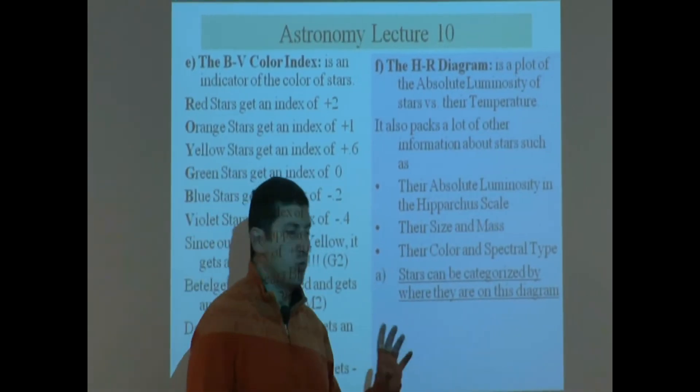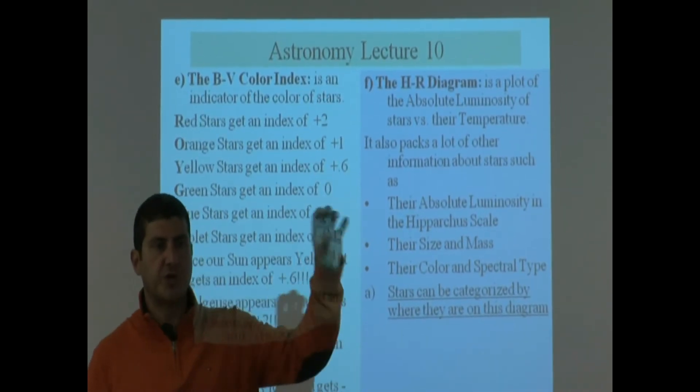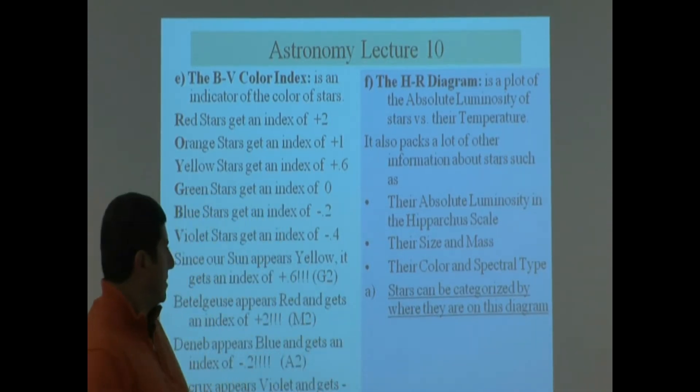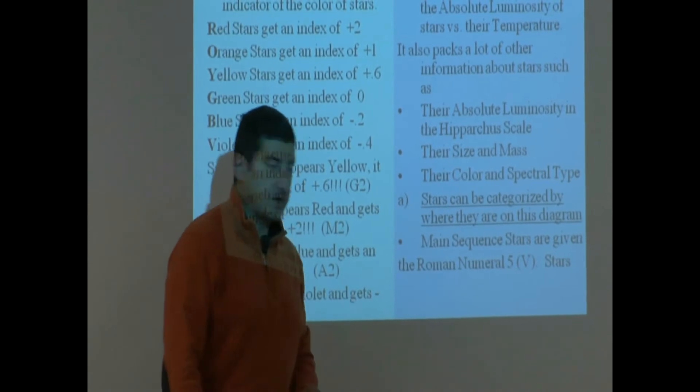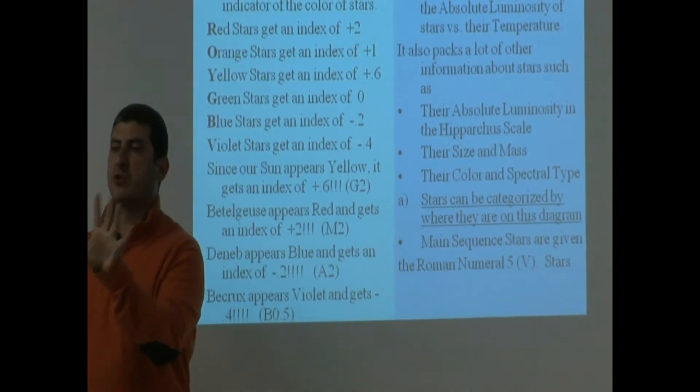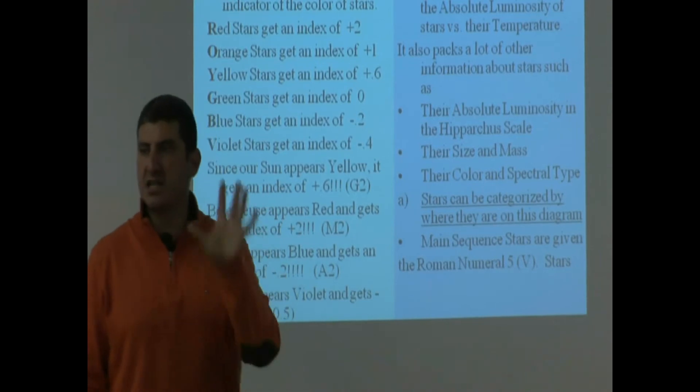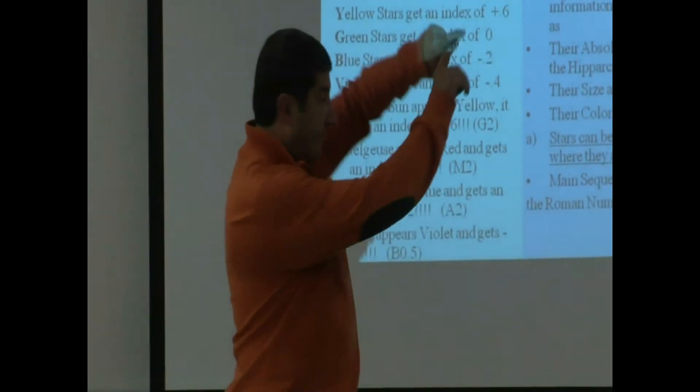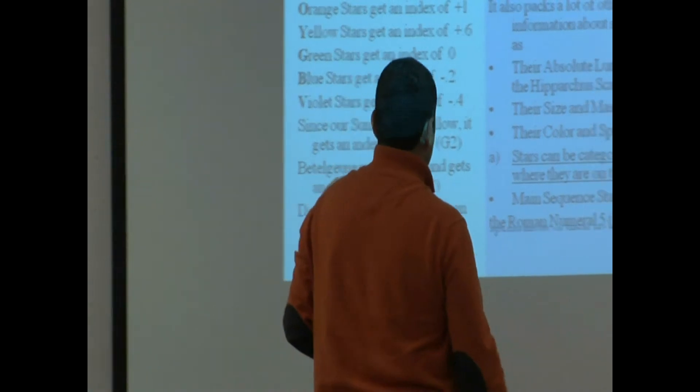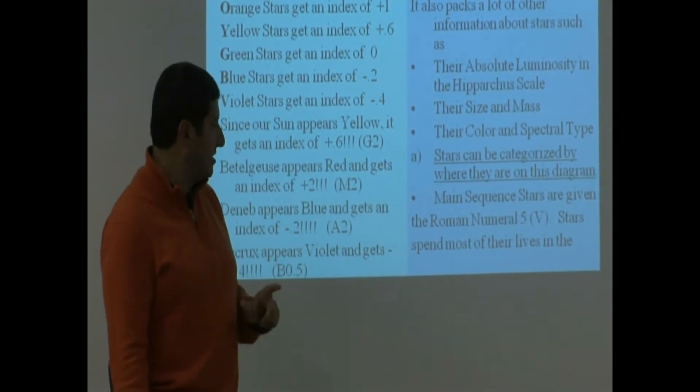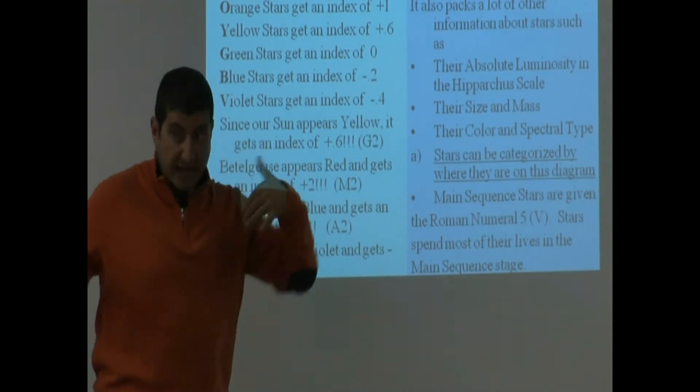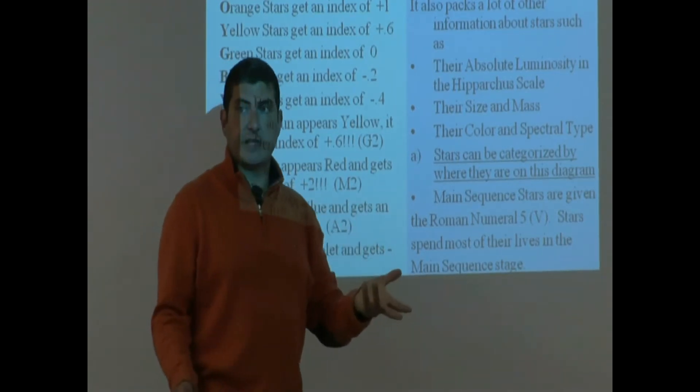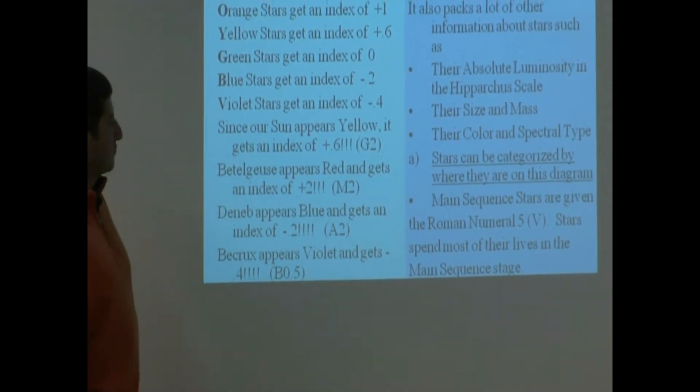Okay, stars can be categorized by where they are on this diagram. Main sequence stars are given Roman numeral V. If a star is categorized by Roman numeral V, it hasn't started dying yet—it's still a living star and will be found on that main strip. Stars spend most of their lives in the main sequence stage. At least 90% of their lifetime is spent as a main sequence star.